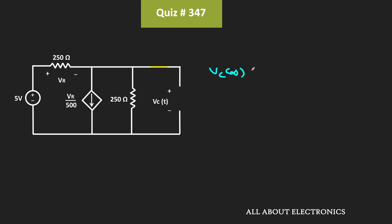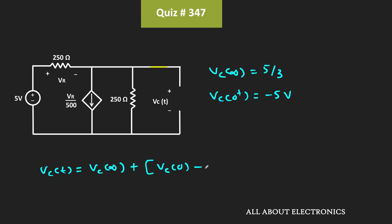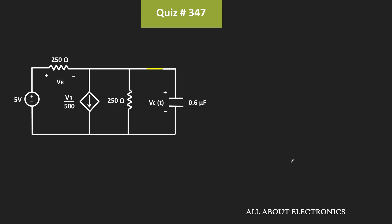So Vc(∞) = Va = 5/3 V. Now we can write the general expression for the capacitor voltage: Vc(t) = Vc(∞) + [Vc(0+) - Vc(∞)] · e^(-t/RC). We already know Vc(∞) and Vc(0+), so now we need to find the RC time constant. The R here is the Thevenin equivalent resistance seen through the capacitor terminals.